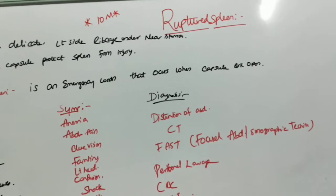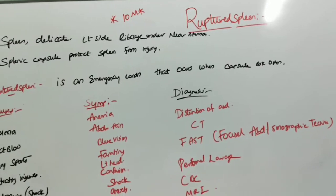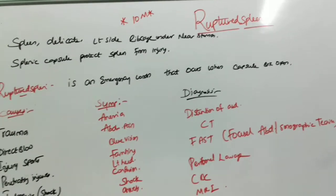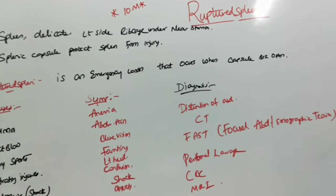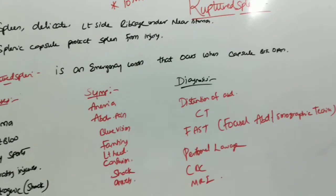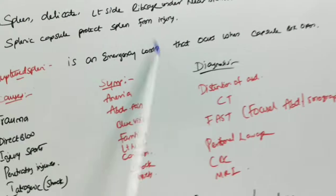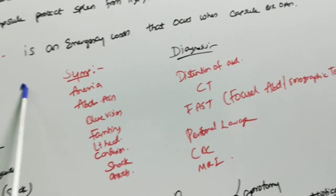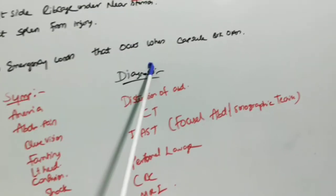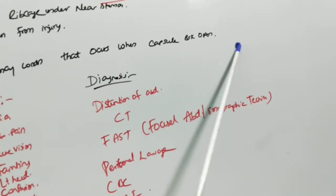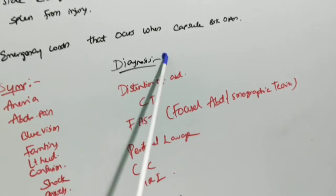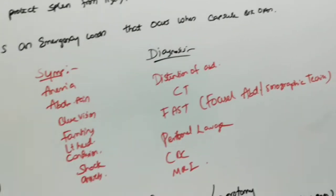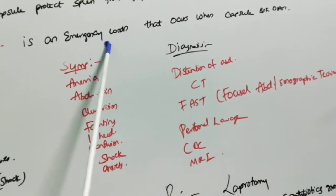The spleen is situated on the left side below the ribcage near the stomach. The splenic capsule surrounds the spleen to protect it from injury. Ruptured spleen is an emergency condition that occurs when the capsule covering the spleen is broken and open.